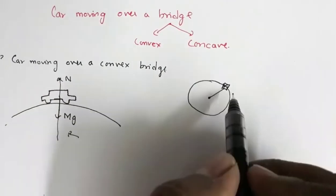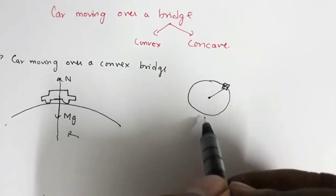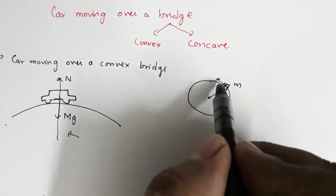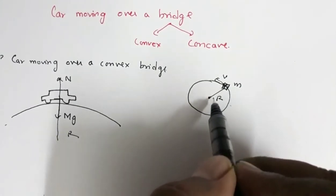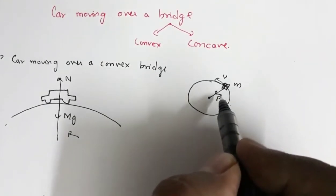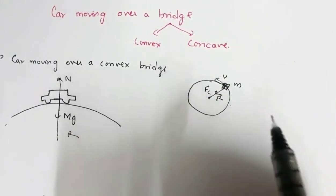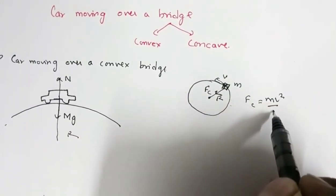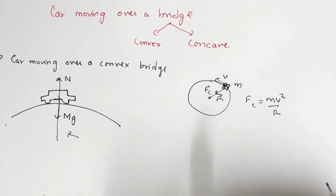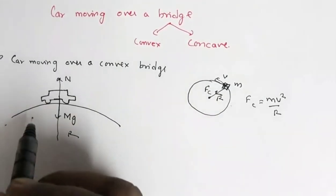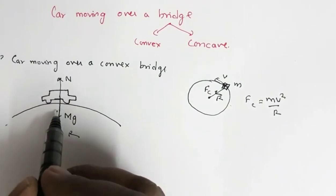For any body moving in a circular path — suppose this is a body of mass m moving with uniform speed v in a circular path of radius r — this body will be acted upon by radial force Fc, given by mv²/r, where m is the mass, v is the speed, and r is the radius. This radial force always acts towards the center, so in this case it acts downward.